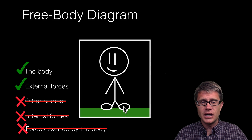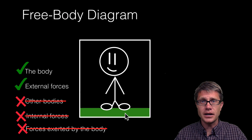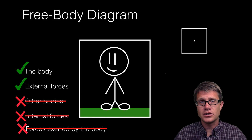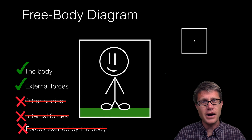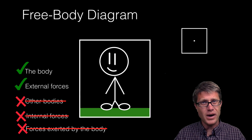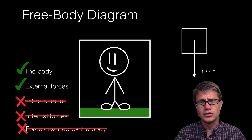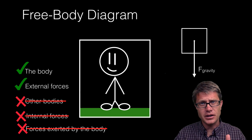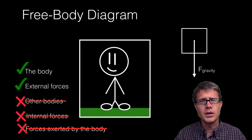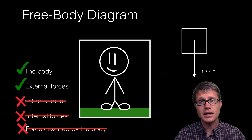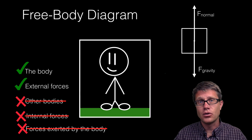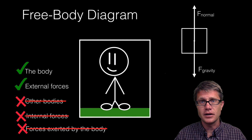Let us do a few free body diagram examples. If you have a person standing on the ground, we start by drawing a square to represent the body. Gravity is clearly acting on it in the vertical direction, and since the person does not accelerate down into the earth, there must be an opposite and equal reaction — that is the ground pushing back on the person, which we call the normal force. Those are the two forces in our free body diagram.